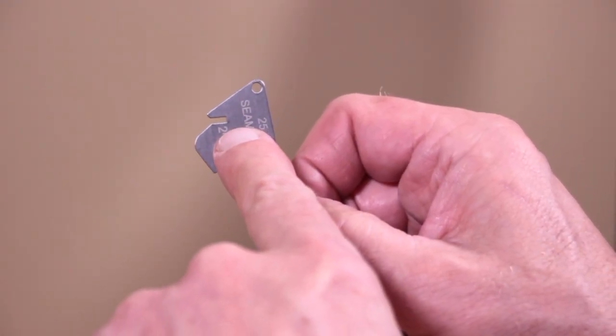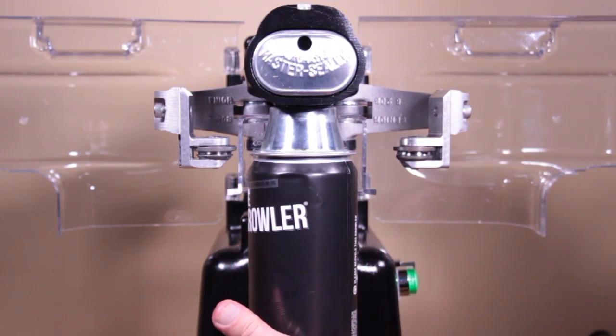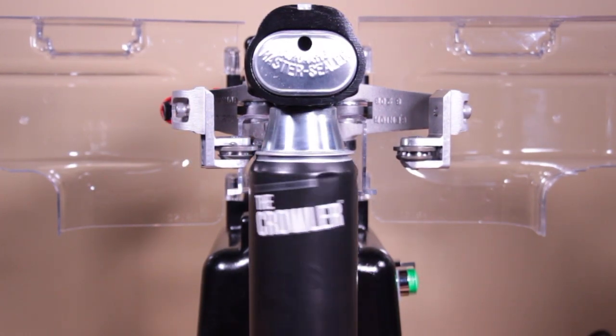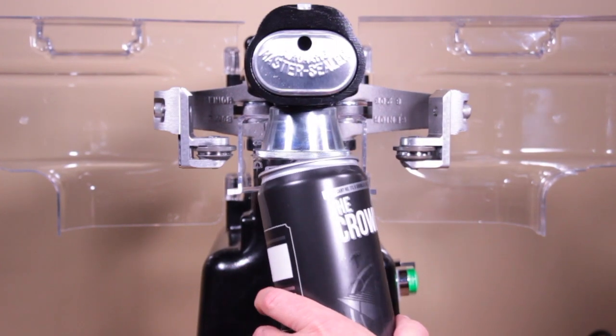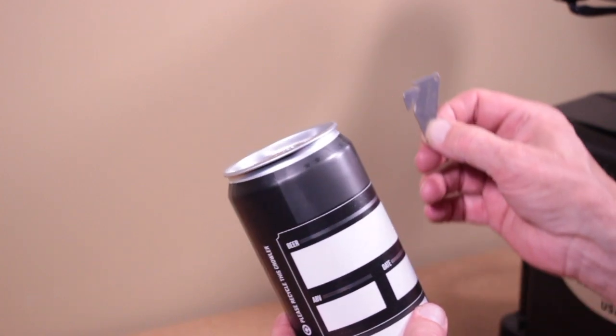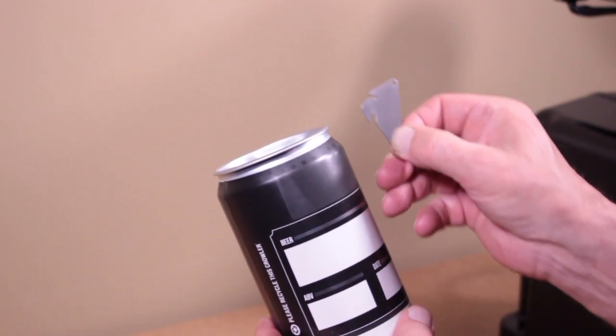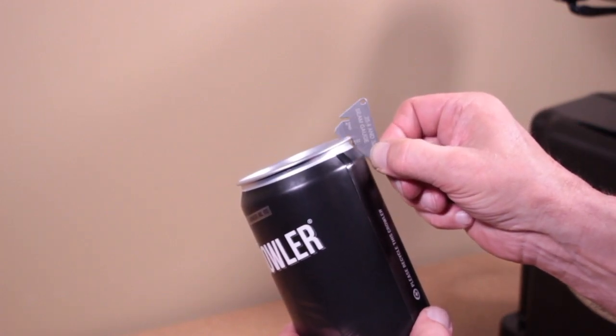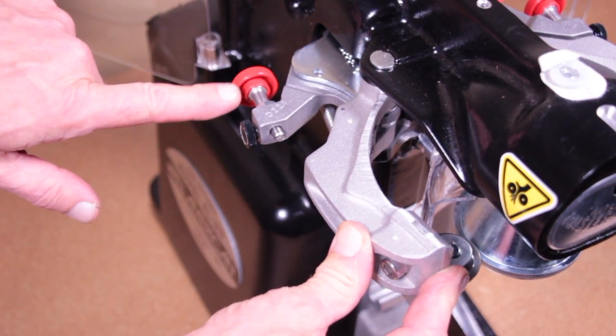Now let's grab our seam gauge, load a can and a lid into the seamer, and cycle it. This cycle will only allow the first seam to run. We will then remove our can. Using the wider slot indicated first on the seam gauge, we will check in four spots around the circumference of the lid. The gauge should fit snug in at least one location and clear in other locations. If the gauge does not fit properly, follow the next steps to adjust your seam.